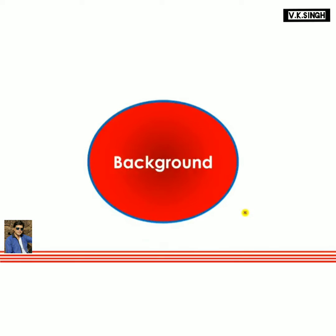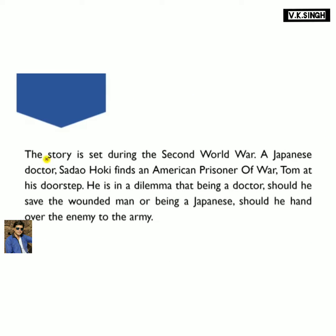The story 'The Enemy' is set during the Second World War, which happened from 1939 to 1945. A Japanese doctor, Dr. Sadao Hoki, finds an American prisoner of war named Tom at his doorstep. Dr. Sadao lives near the sea and one evening sees an injured man come out of the sea and fall down on the shore. Upon inspection, he finds the man is an American who escaped from a Japanese prison.